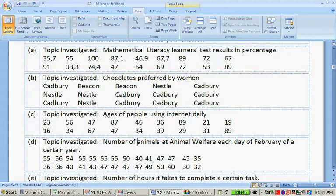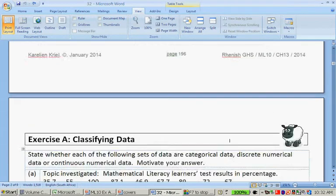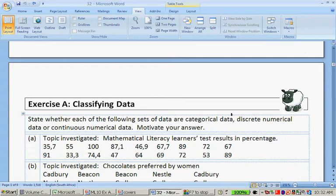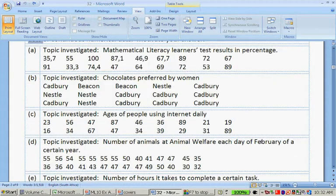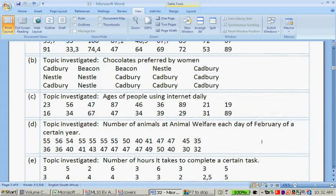Number of animals at the animal welfare each day of February for a certain year: 55, 56, 54, 55. We can't have half an animal. Therefore, it is discrete numerical data because we're talking about the amount of animals, but we can't have, we only have whole animals.